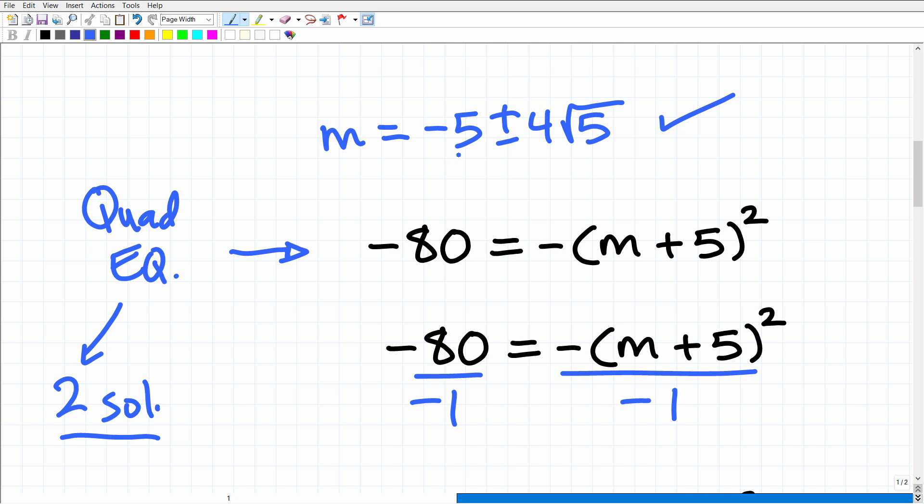In this case, our two solutions is -5 + 4√5 and the second is -5 - 4√5. So these are our two unique solutions right here. Now when you look at a quadratic equation or you recognize that you're dealing with one, you have to think about the different options that you have. This goes into your knowledge of algebra.